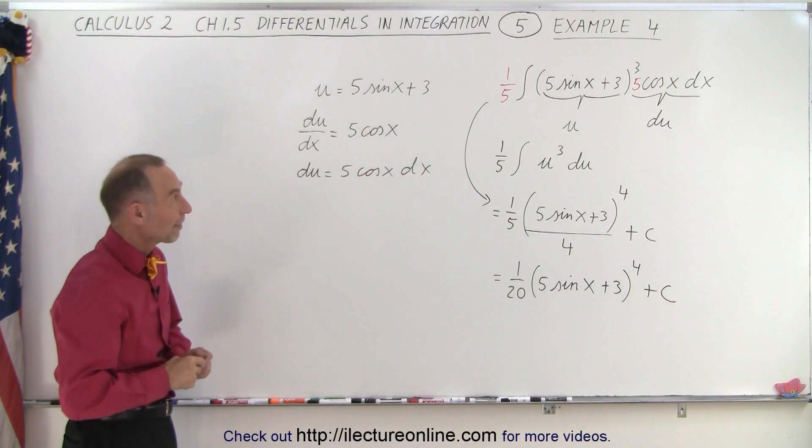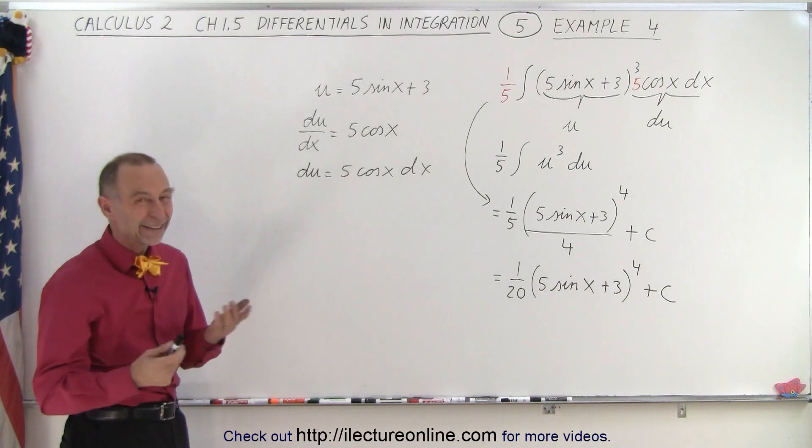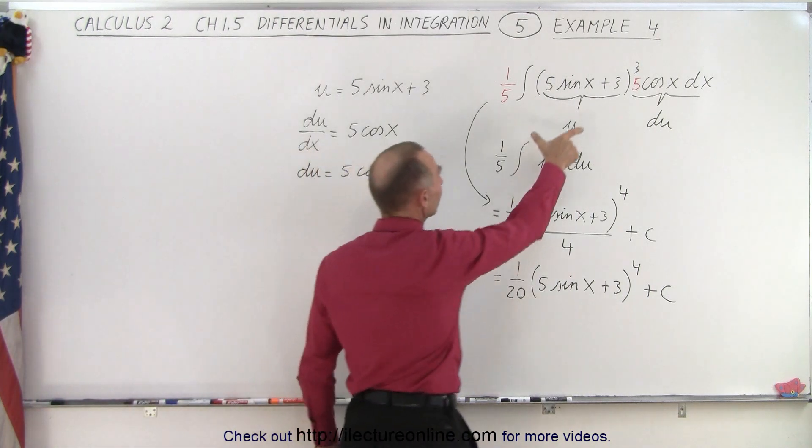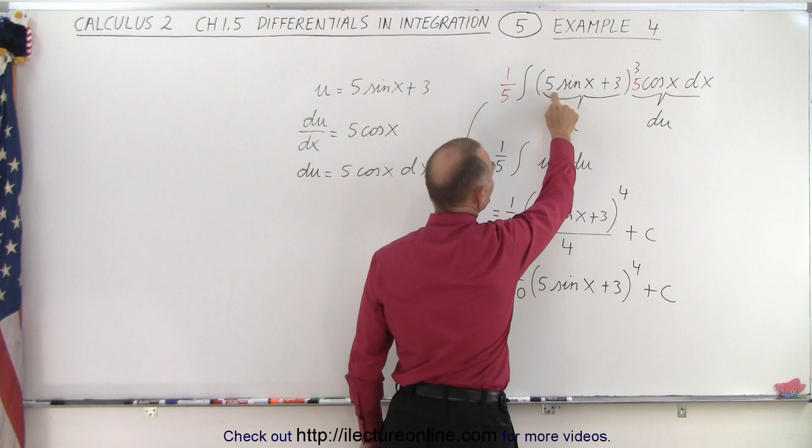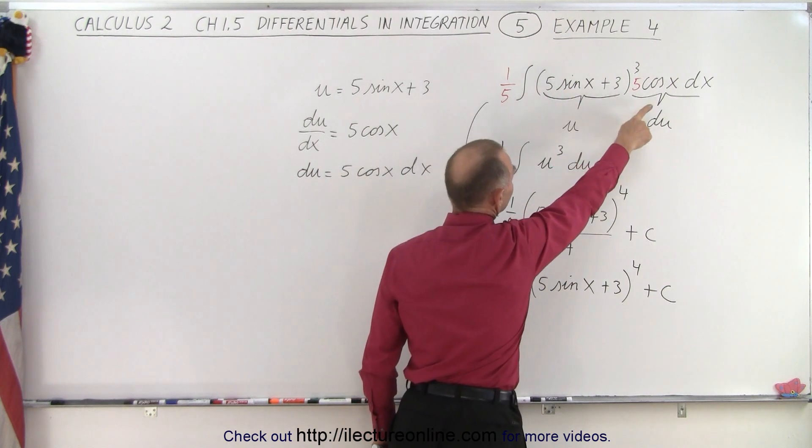And so again, that's how we find the proper differential. The easiest thing to do is to simply say if I call this u, what will be my du? You take the derivative of this, that would be 5 times the cosine of x times dx.